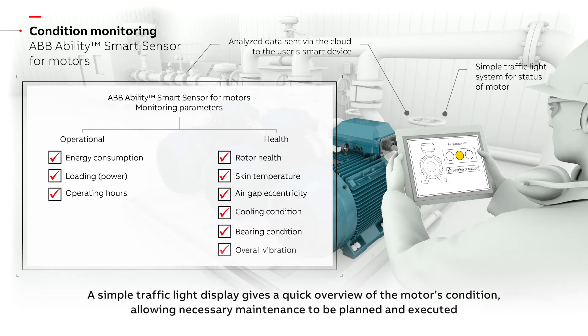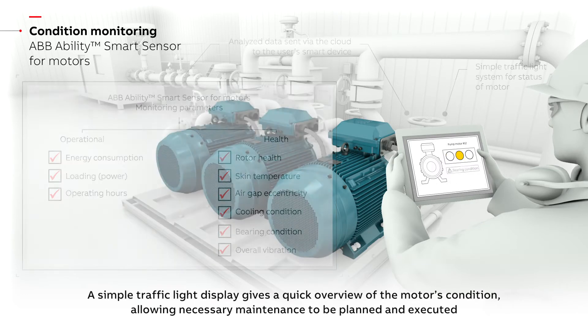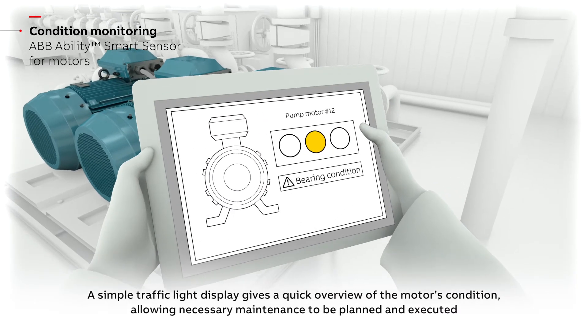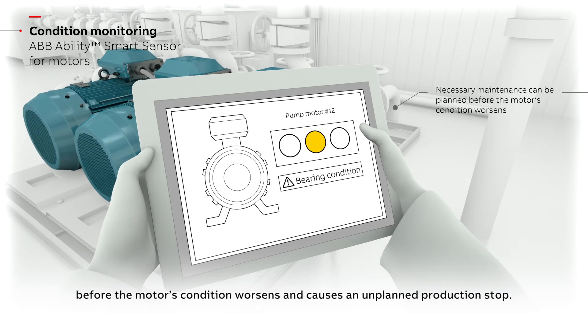A simple traffic light display gives a quick overview of the motor's condition, allowing necessary maintenance to be planned and executed before the motor's condition worsens and causes an unplanned production stop.